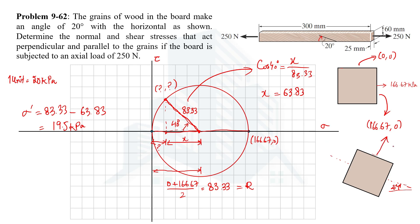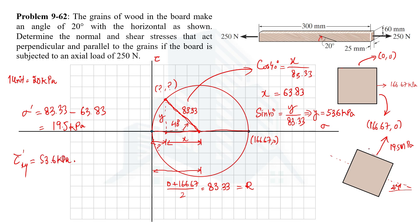So the perpendicular stress, or normal stress, on this plane is 19.5 kPa. Now we need to determine the shear stress as well. The shear stress is the perpendicular side of the right-angle triangle. Using sine 40° equals y divided by 83.33, we get y equal to 53.6 kPa. The shear stress is positive 53.6 kPa, acting clockwise. Therefore, the stress perpendicular to the grain is 19.5 kPa and the stress parallel to the grain is 53.6 kPa.